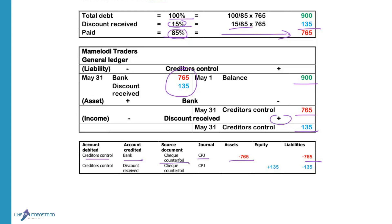For the discount, you will also debit creditors control because you want to reduce your liabilities by 135 Rand. Discount received is an income. Income will increase the profits and the owner will get more profits, so the equity will increase.